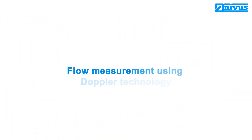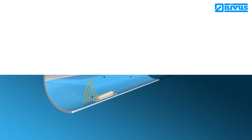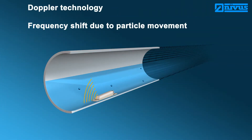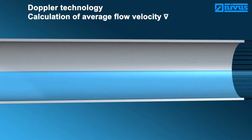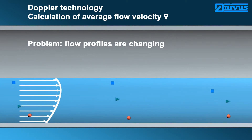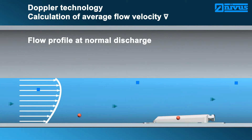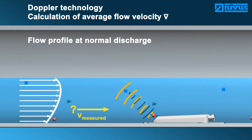Flow measurement using Doppler systems. The Doppler technology uses a sensor continuously transmitting ultrasonic signals at a constant frequency. The particles contained in the medium reflect the signal. The particle movement shifts the frequency of the reflected signal. The frequency shift is detected by the sensor — the greater the particle velocity, the greater the frequency shift. Doppler measurement is a spot velocity measurement; the sensor is not able to determine at which level the velocity has been detected, and due to this reason the flow profile cannot be represented.